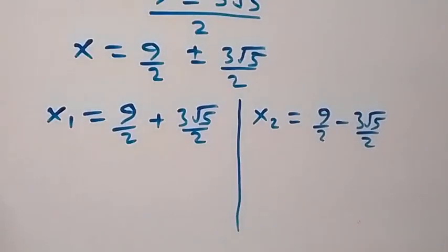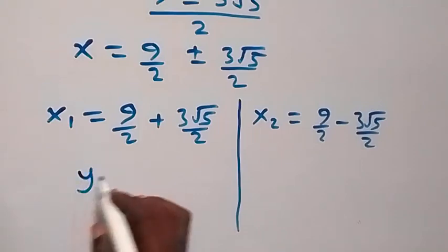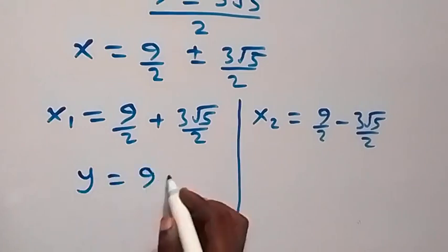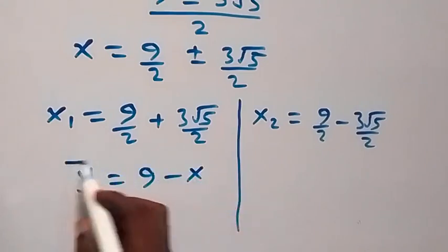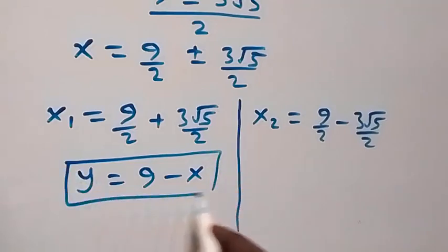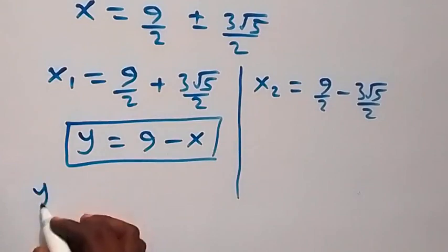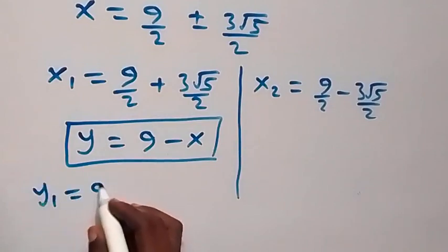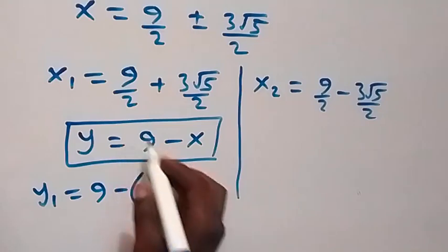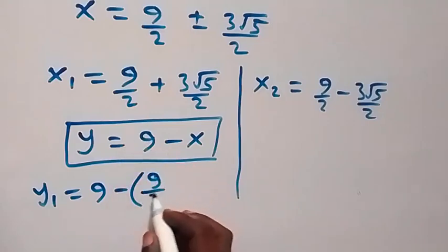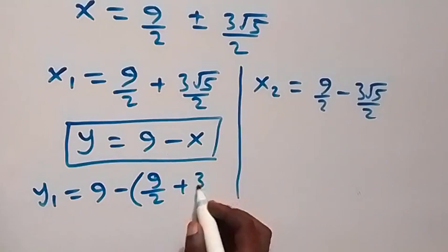So here we have the values of x, and then we can get the corresponding value of y using the relation y equals to 9 minus x. That means y1 will then be equal to 9 minus x1, which is 9 over 2 plus 3 root 5 over 2.